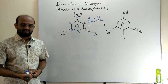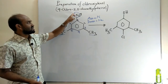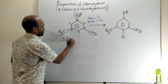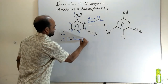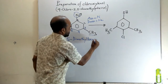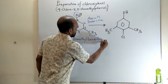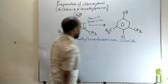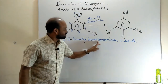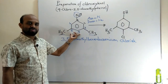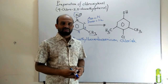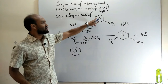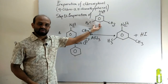Now we got the name of this compound. That is 3,5-dimethylbenzene diazonium chloride. It's a big name. The name is 3,5-dimethylbenzene diazonium chloride. From this compound, the main component of Dettol will be prepared stepwise. Now let's see the steps one by one. Step 1: preparation of 3,5-dimethylbenzene diazonium chloride. This compound is prepared in two ways.